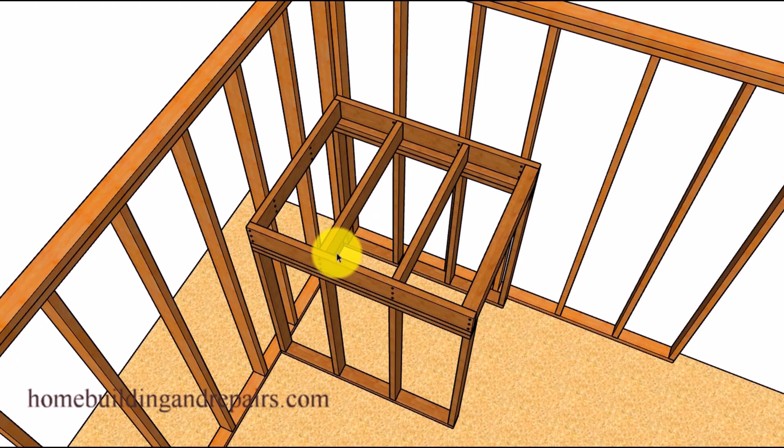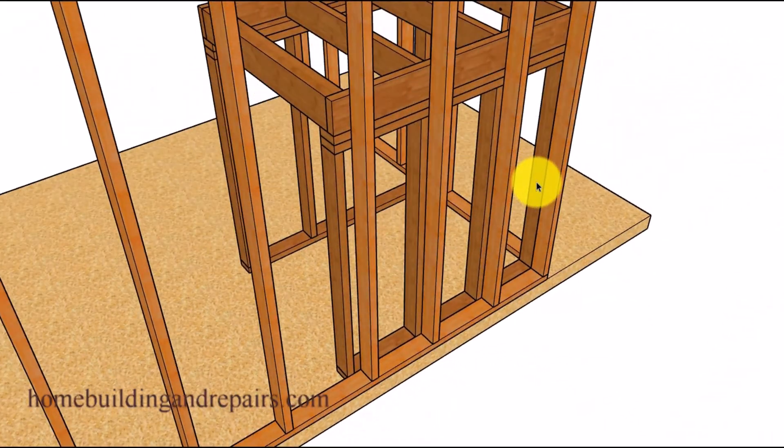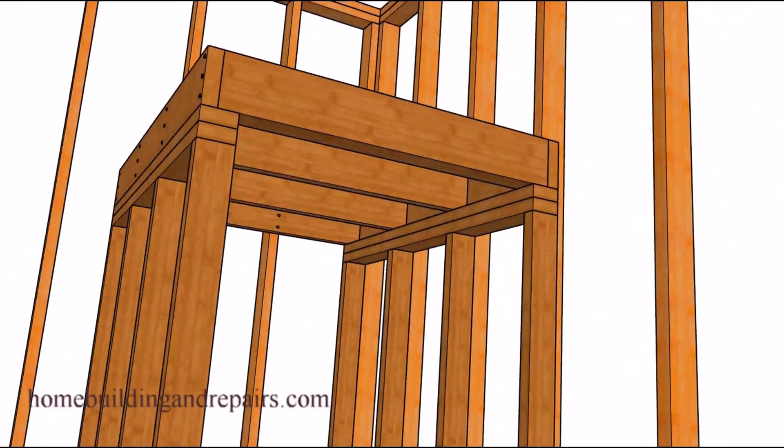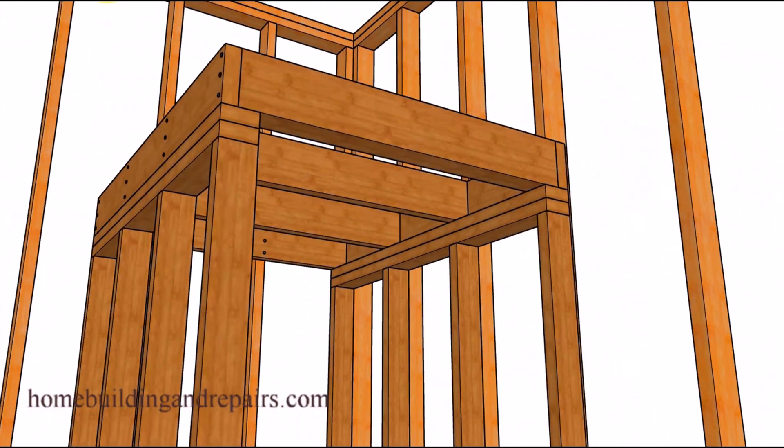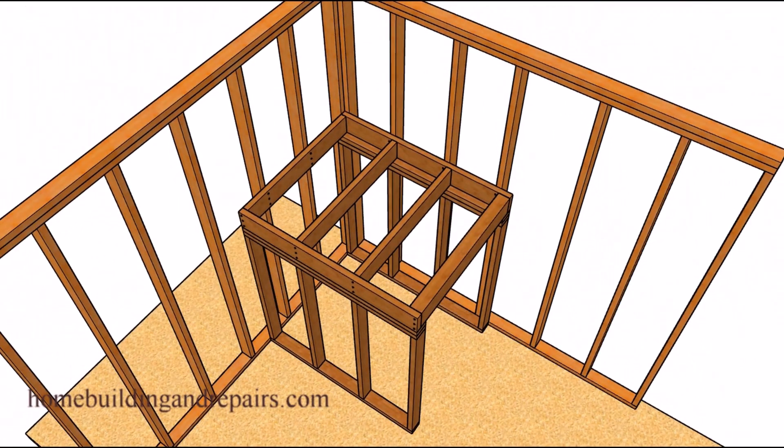Another option would be to frame the landing on top of another wall. So we would be using two walls here. View from the other side. This would provide you with a sturdy landing no doubt about it because we don't have to worry about any hangers loosening up over time.